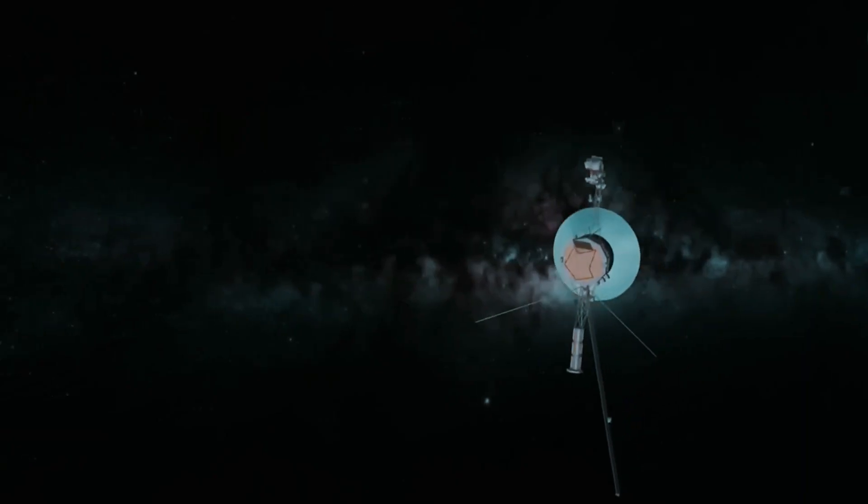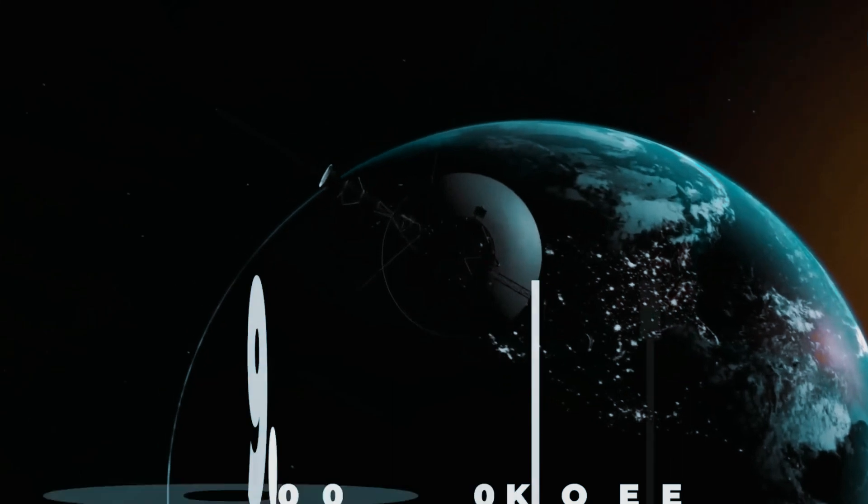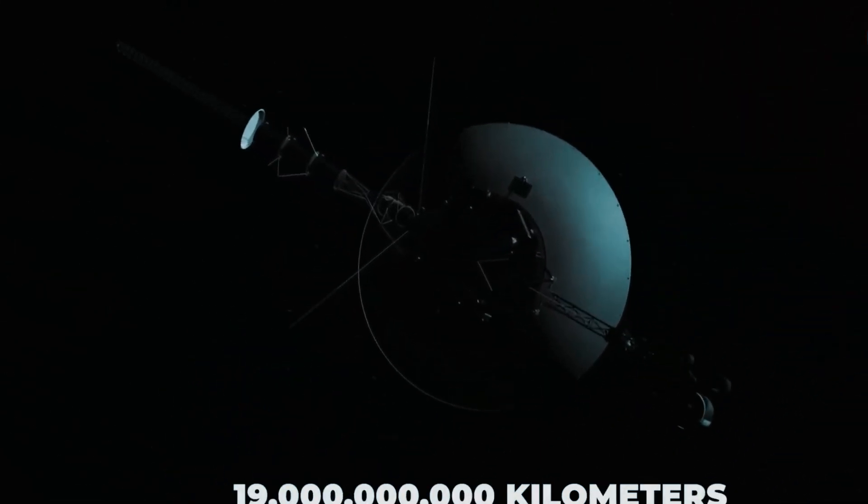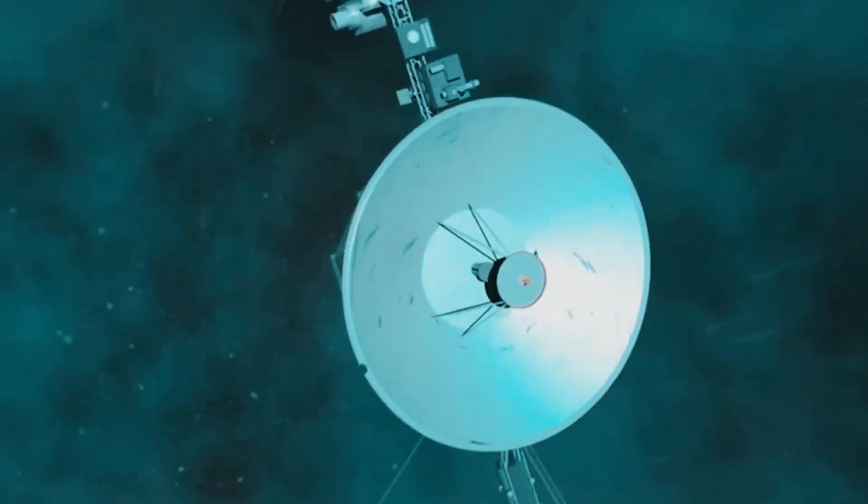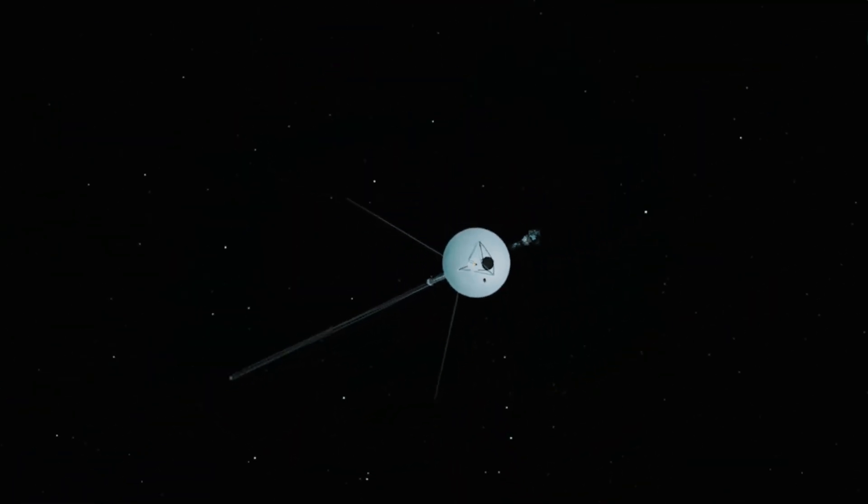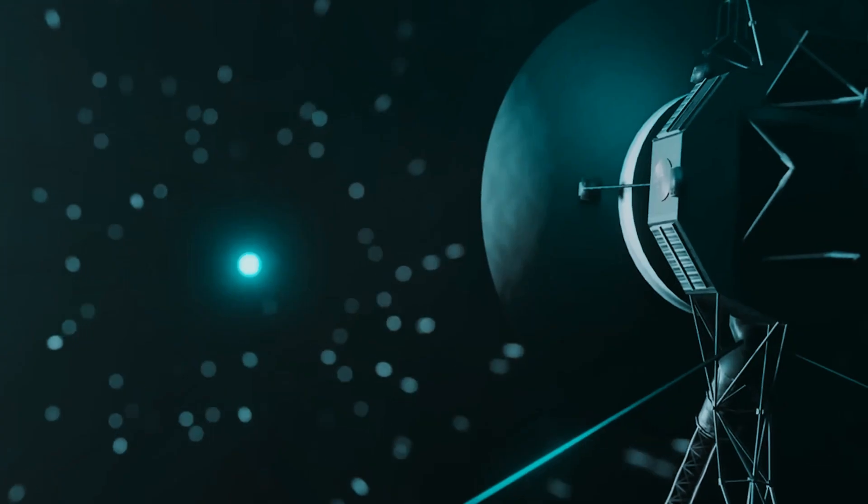This spacecraft is located 19 billion kilometers away from our Earth, and its companion, Voyager 1, is the farthest artificial object from Earth. It might surprise you to know that Voyager 1 is currently 24 billion kilometers away from us.